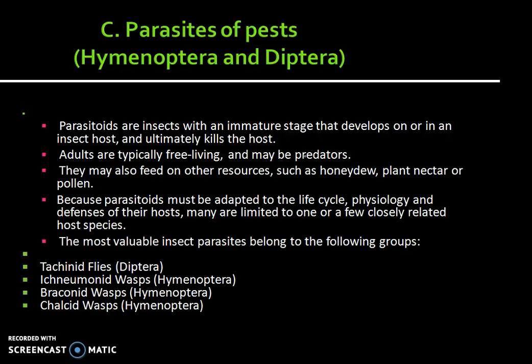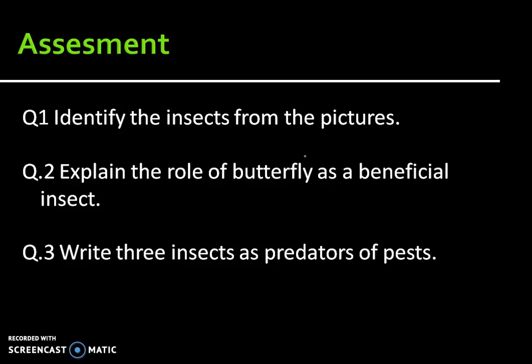The most valuable insect parasites belong to the following groups: Tachinid flies belonging to Order Diptera; Ichneumonid wasps, Braconid wasps, and Chalcid wasps, all belonging to Hymenoptera. This covers all three categories of beneficial insects.